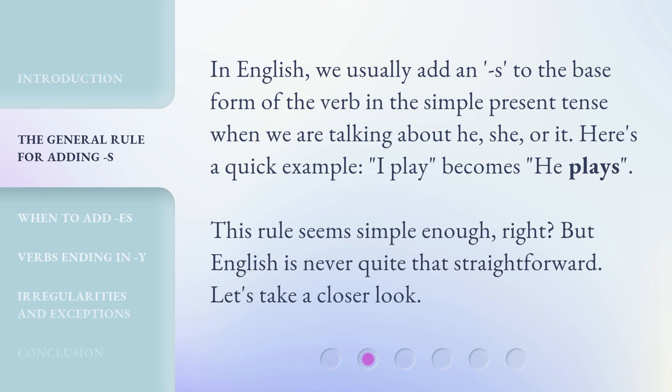In English, we usually add an S to the base form of the verb in the simple present tense when we are talking about he, she, or it. Here's a quick example: I play becomes he plays. This rule seems simple enough, right? But English is never quite that straightforward. Let's take a closer look.